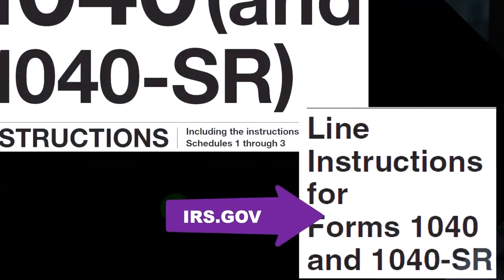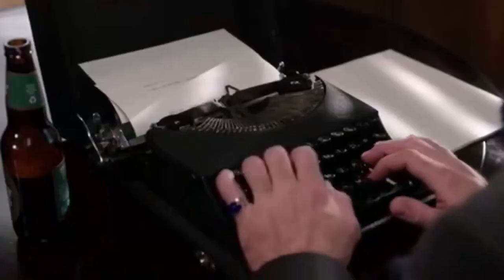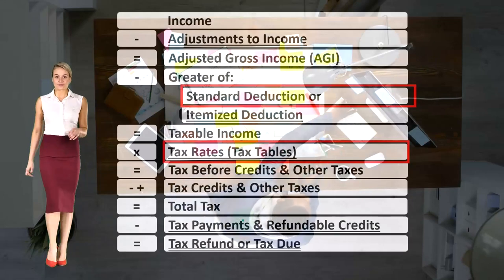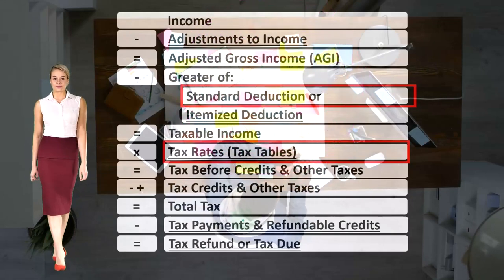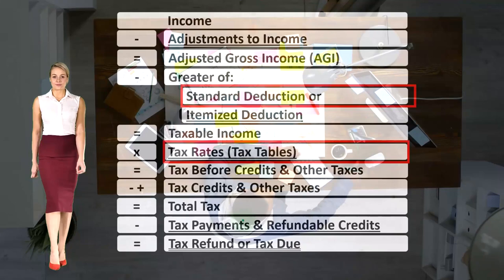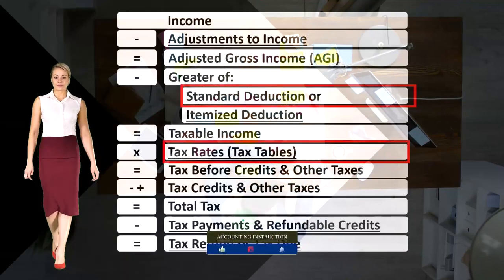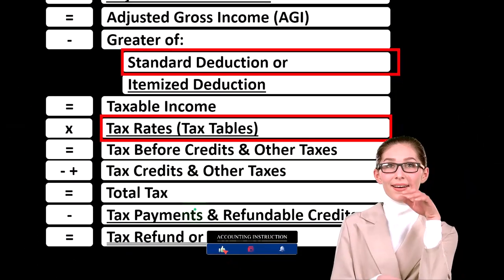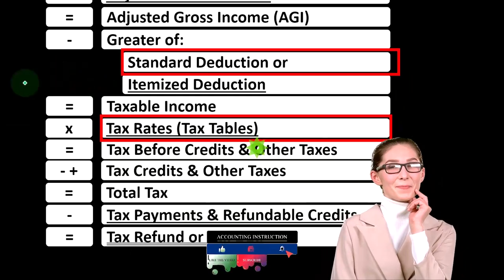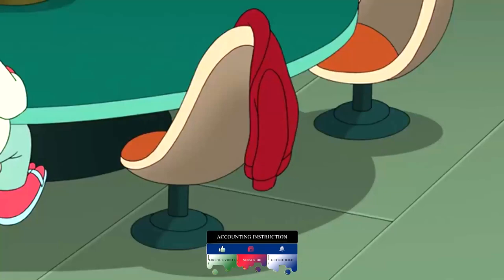When thinking about filing status, note the various options such as single, married filing joint, head of household, and so on. That's at the top of the 1040, but it has an impact on the income tax equation. Some of the major impacts would be on the standard deduction and possibly the tax rates.